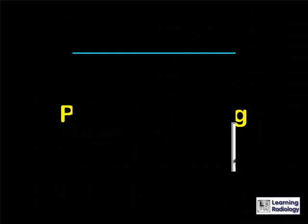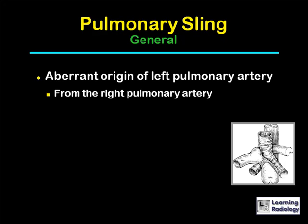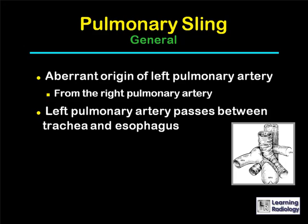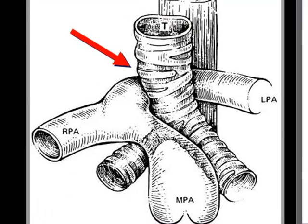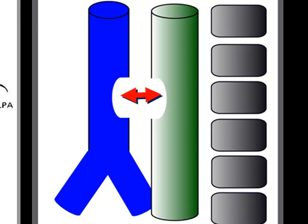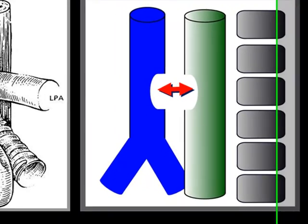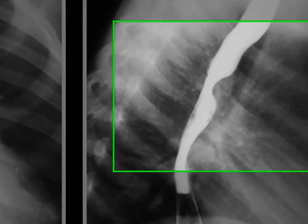Pulmonary slings occur as a result of an aberrant origin of the left pulmonary artery from the right pulmonary artery. The left pulmonary artery passes between the trachea and the esophagus, and most of these are associated with other anomalies — for example, stenosis of the right main stem bronchus that can lead to air trapping, lobar emphysema, and a hyperlucent lung. The diagram shows the left pulmonary artery arising from the right pulmonary artery and passing between the trachea and the esophagus. On the lateral view, there is an anterior compression on the barium-filled esophagus and a posterior impression on the air-filled trachea, with something in between the trachea and esophagus.